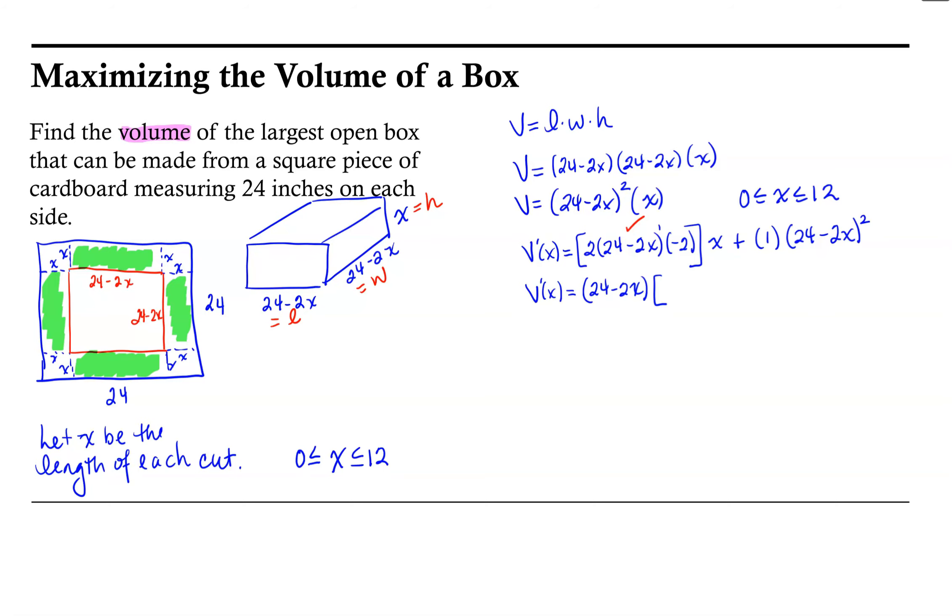And so I'm left with a 2 times a negative 2 times an x. So that'll give us negative 4x plus, and now I took one of the factors of 24 minus 2x, but there were two of them. So I'm going to have a remaining factor of 24 minus 2x. So v prime of x is equal to 24 minus 2x, and then inside my brackets here I'll have 24 minus 6x. So that's a pretty simplified form of our derivative.